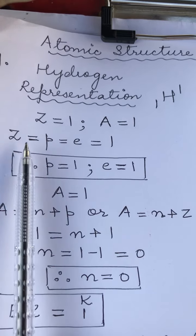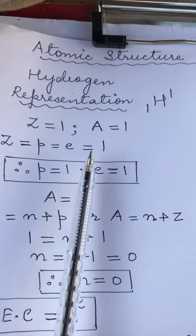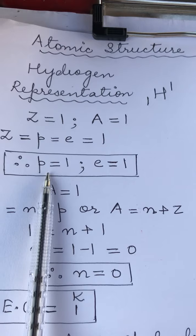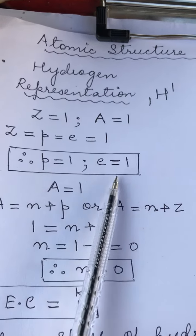So using the formula Z is equal to P equals to E which is equal to 1, we get the number of protons and electrons as 1 and 1 each.